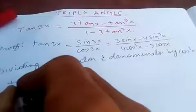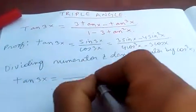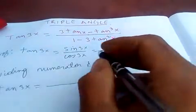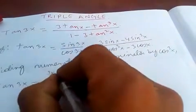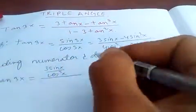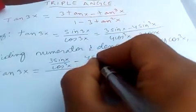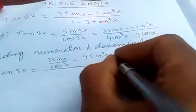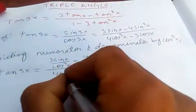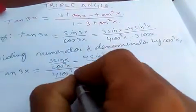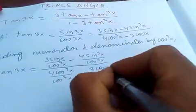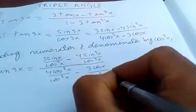So we get tan 3x equals, if you divide by this, it is 3 sin x over cos³x minus 4 sin³x over cos³x, and 4 cos³x over cos³x minus 3 cos x over cos³x.